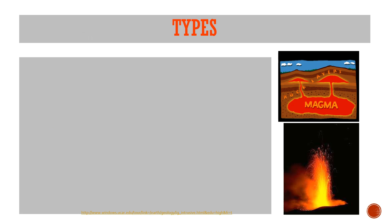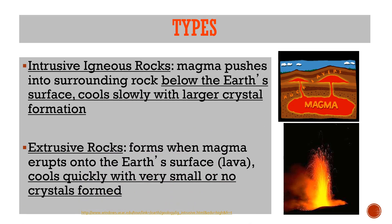There are two main types of igneous rocks: intrusive and extrusive. Intrusive, also called plutonic, cools slowly beneath the earth's surface and is created by magma, resulting in very large crystals — what we call coarse-grained rocks. Extrusive rocks, also called volcanic rocks, form when magma erupts onto the earth's surface as lava and cools quickly, forming very small or no crystals — these are fine-grained rocks since the cooling process is fast.